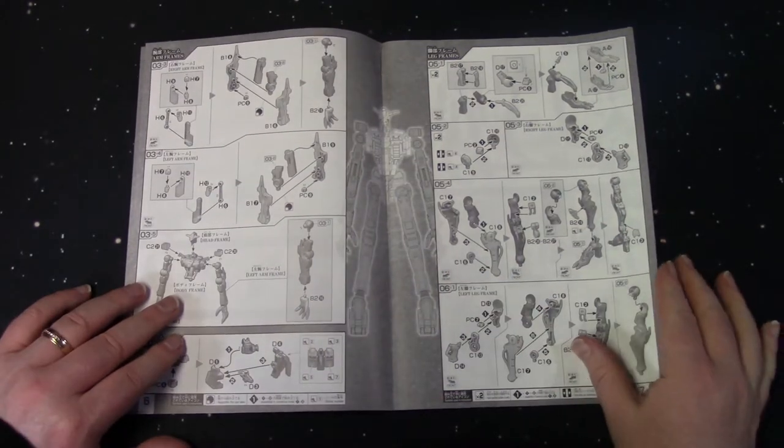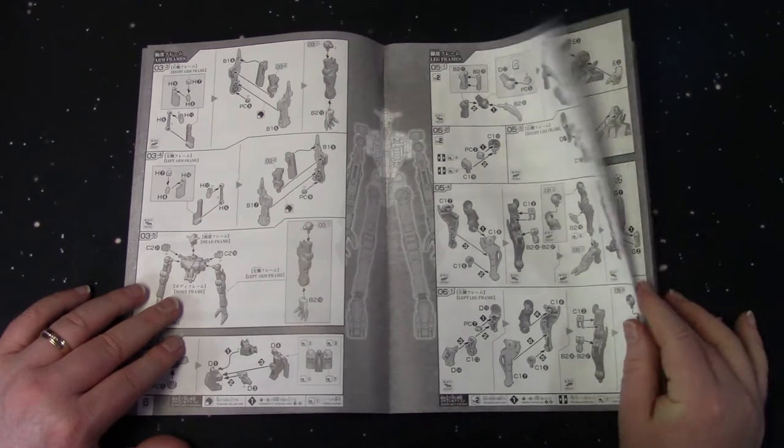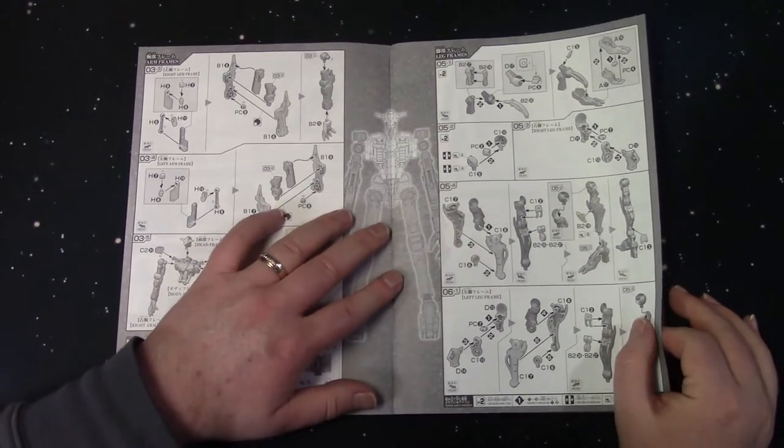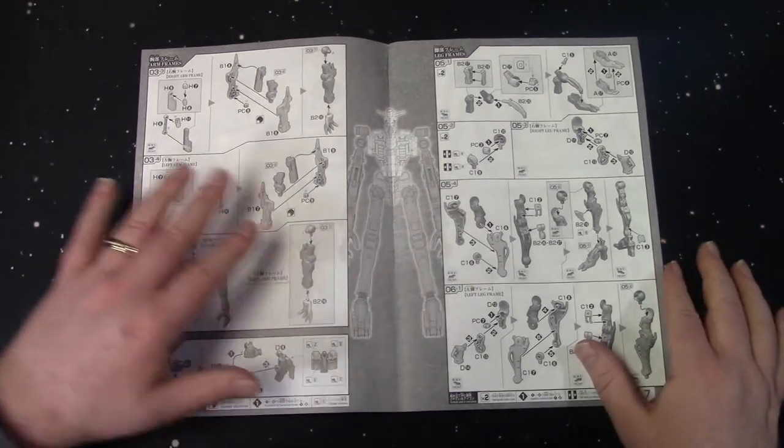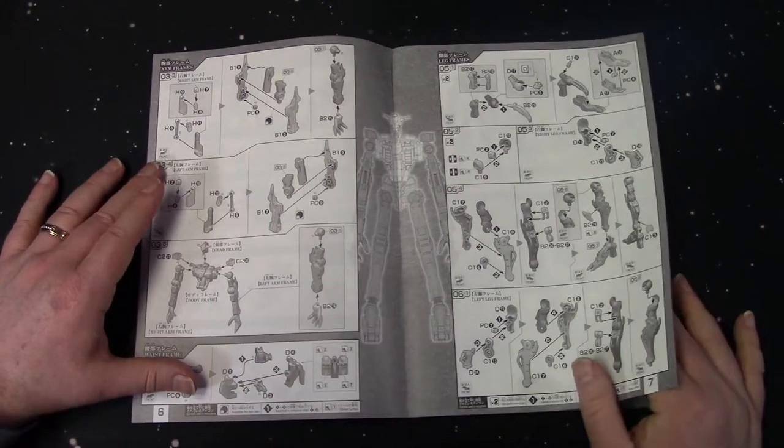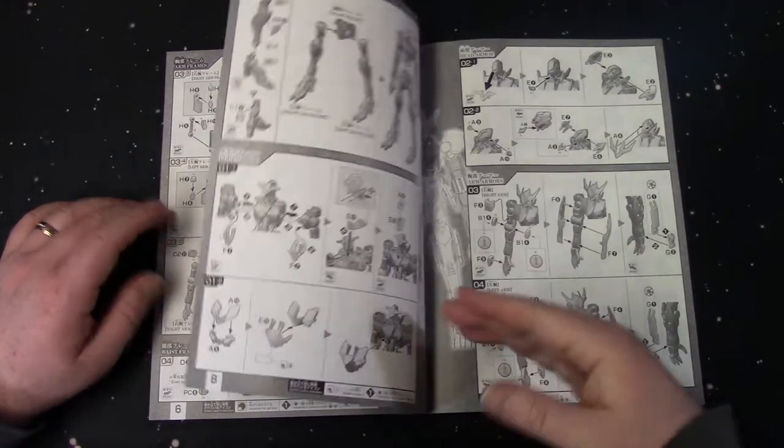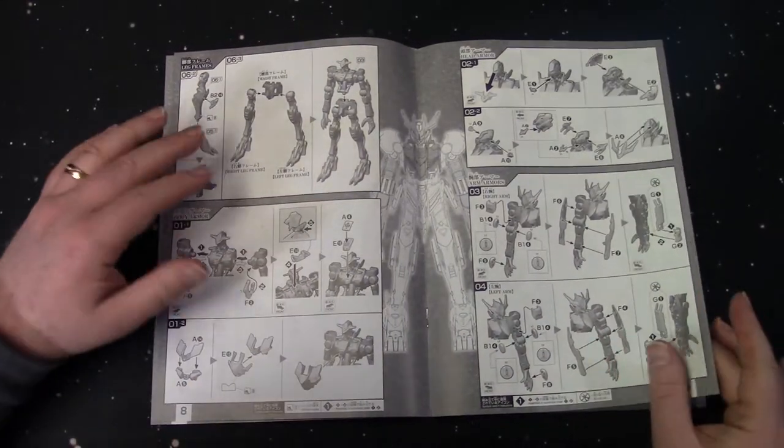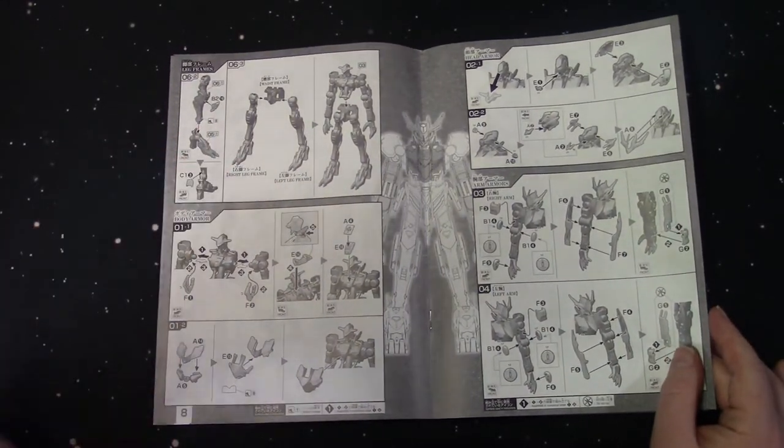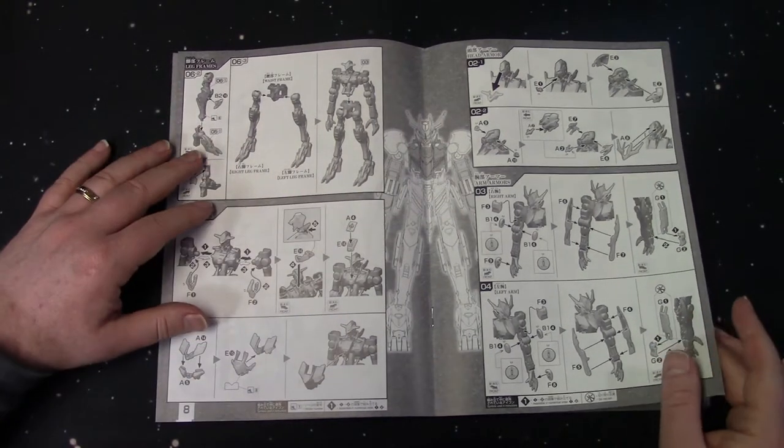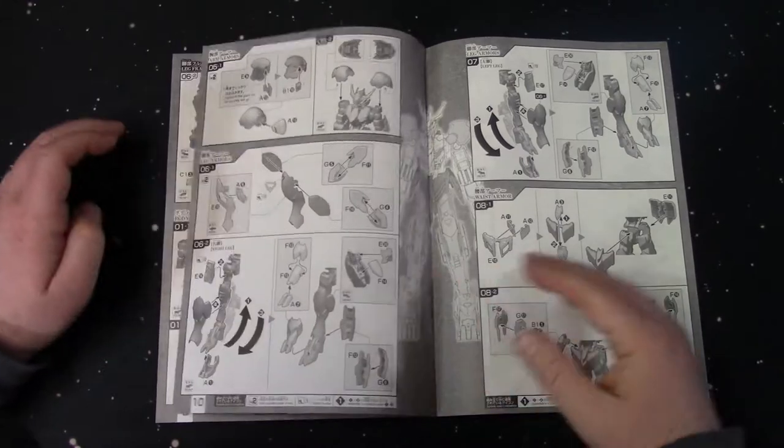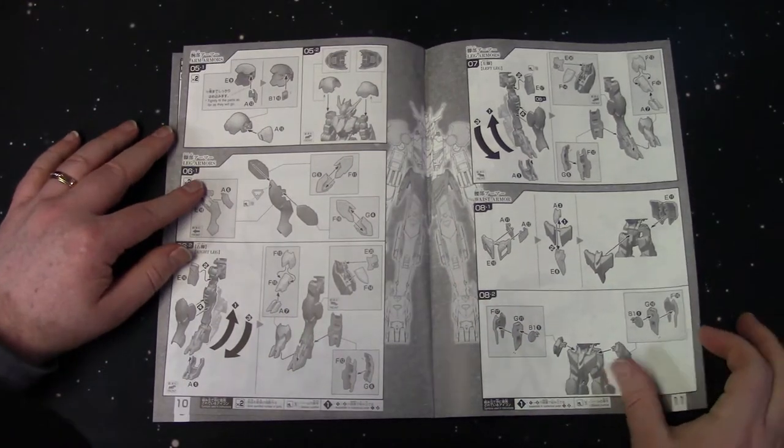And these, now these are more like master grade instructions. I know they're not master grade, but they're more like the master grade instructions. Not like the high grade where you flip it out and it's like a big leaflet. This is more involved. Obviously, you've got the inner frame. I apologize for my voice, guys. I just had a procedure, a bronchoscopy and it always messes with my throat.